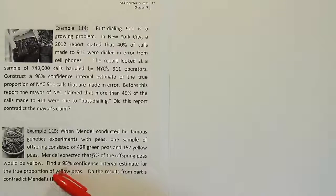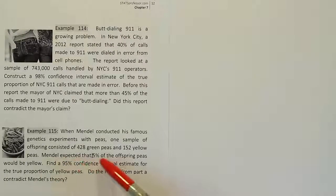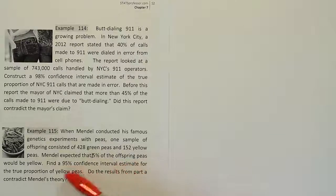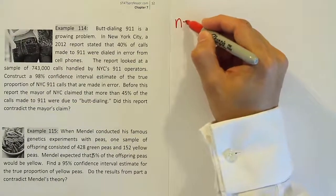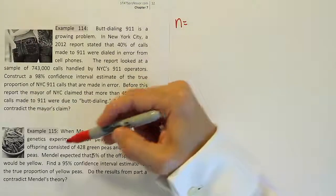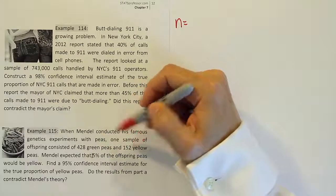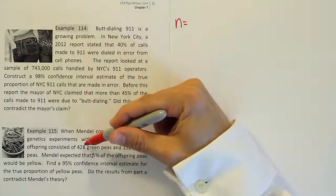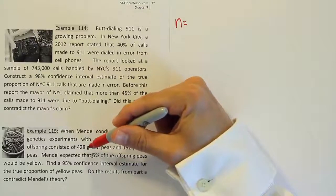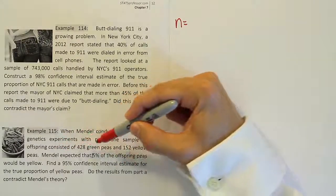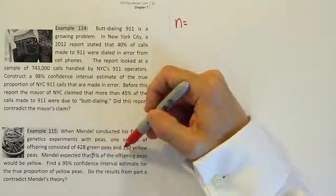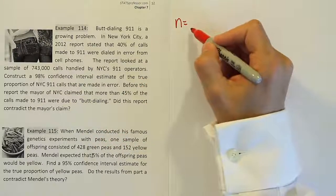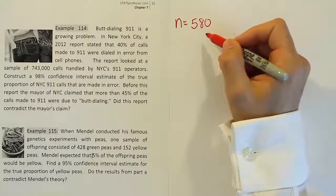Let's begin the problem and look at what it's asking us to find. It says find a 95% confidence interval estimate for the true proportion of yellow peas. So we know it's a confidence interval for the proportion of yellow peas. Let's start writing down what we need for the problem. The n, first of all. It says one sample of offspring consisted of 428 green peas and 152 yellow peas. A common mistake is for people just to assume the large number here is your sample size. That's not right, actually. If you add 428 and 152, you'll get 580. So there's 580 peas total in the study.